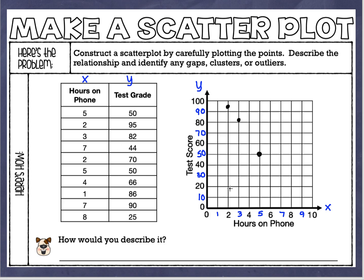Seven hours on the phone and a grade of 44, so that's between 40 and 50, slightly lower than center. Then we've got 2 and 70 — go to 2 and then up to 70. Then 5 and 50 — look, we already had one there. Then 4 and 66 — that's going to be right between 60 and 70, a little farther than halfway. Then 1 and 86 — up here between 80 and 90, a little closer to 90. Then 7 and 90 — 7 over here, up at 90.